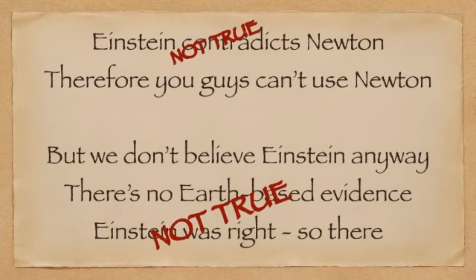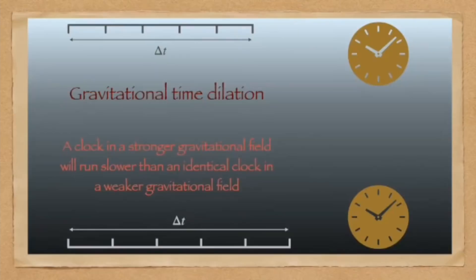Even leaving that fundamental problem aside, there is an even more fundamental issue: both of these statements are factually incorrect. Einstein, as we have seen, does not contradict Newton — Einstein in fact asserts that Newtonian theory is extremely accurate in terrestrial systems. Similarly, we actually do have terrestrial evidence that supports the curvature of spacetime as proposed by Einstein.